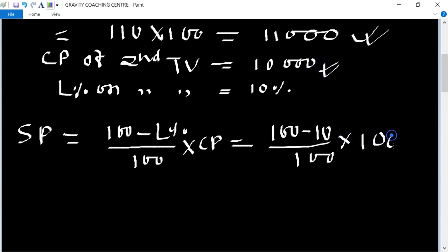So equal to 100 minus 10 upon 100 into CP of the second TV is rupees 10,000. So zeros cancel, equal to 90 multiply 100 equal to 9,000.